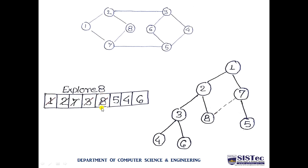Next, we explore node 8. From node 8, there are only two options: go toward 2 or toward 7. Both 2 and 7 are already in the queue, so we cannot visit any new node. Node 8 has no new children in the spanning tree. However, since 8 was already directly connected to 2 and had a connection to 7, we represent this with a dashed line — indicating a partial connection, not a direct tree edge.